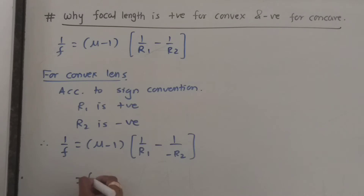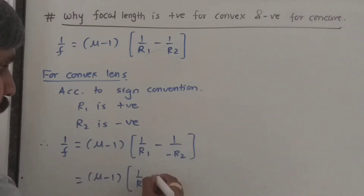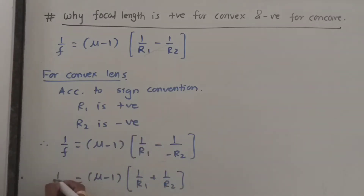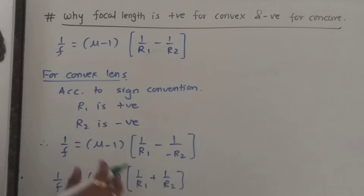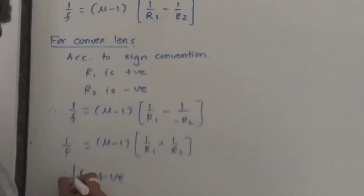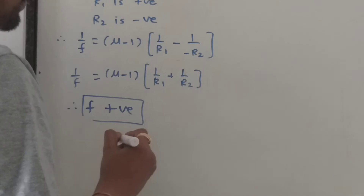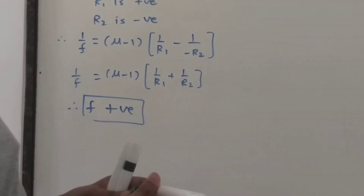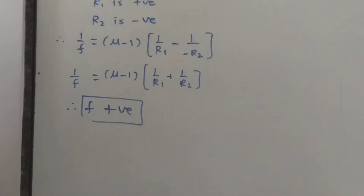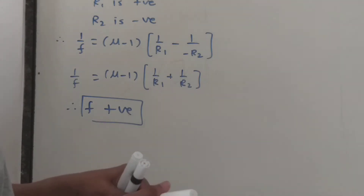So this comes out to be mu minus 1 times 1 upon R1 plus 1 upon R2. Since both signs are positive, your f has to be positive — it cannot be negative. Because mu is always the absolute refractive index, which is always greater than 1. Therefore, your focal length is positive.